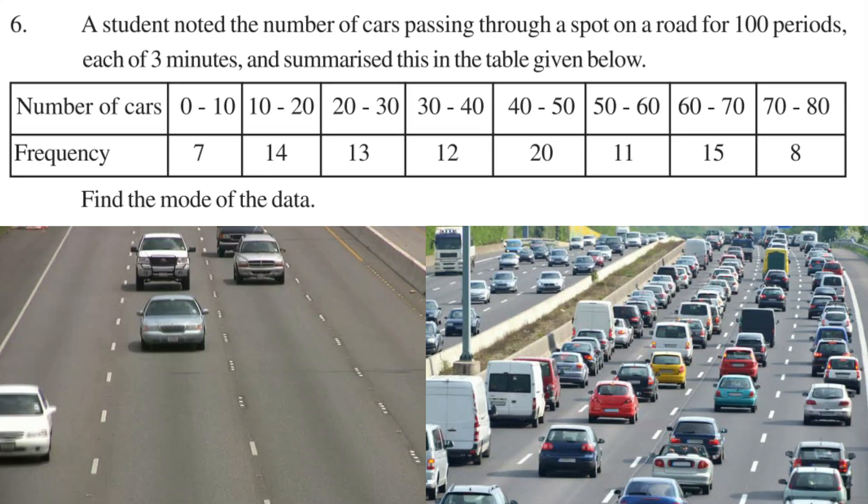Problem sixth problem. A student noted the number of cars passing through a spot on a road for 100 periods, each of 3 minutes, and summarized this in the table given below.